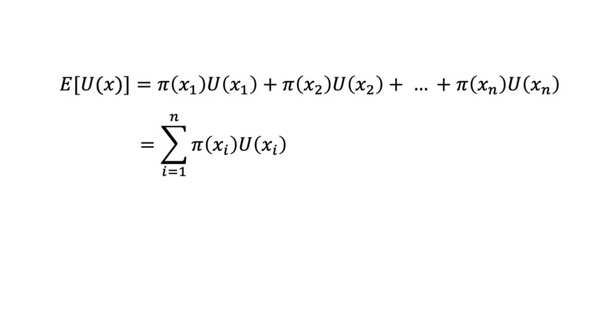Third, weight the utility of each outcome u(xi) by the subjective probability π(xi). Fourth, add the weighted utilities.